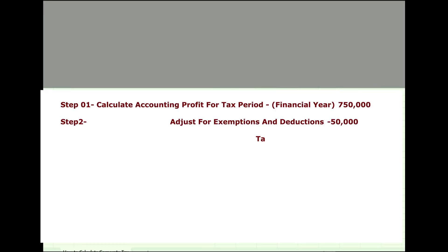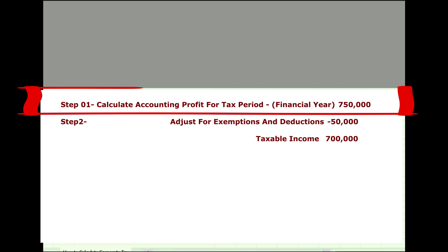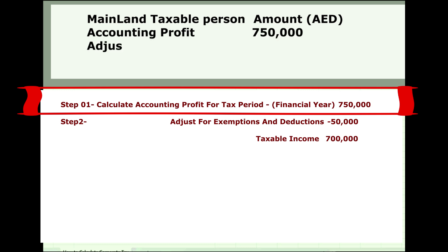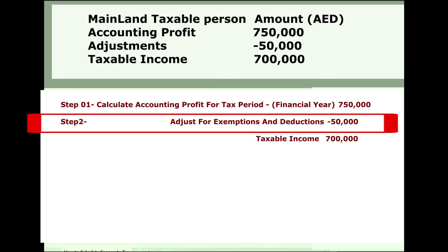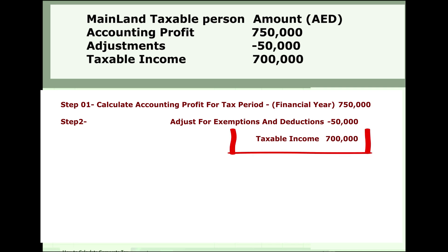Let's understand this with an example. Suppose you are a taxable person liable to pay tax, and your net profit for a particular year is 750,000 — taken from your financial statements. You will then make adjustments for allowed and not-allowed expenses. Let's assume adjustments of 50,000.